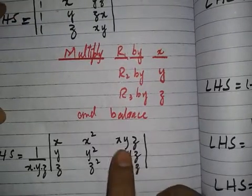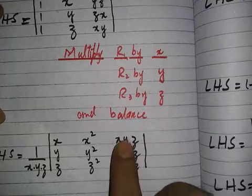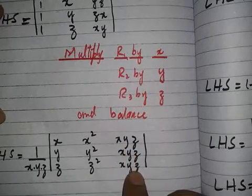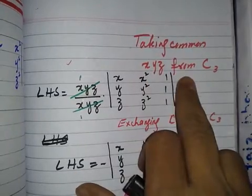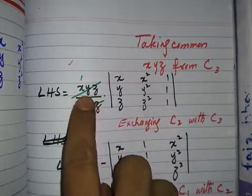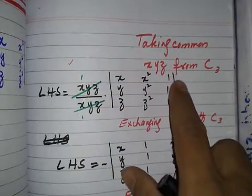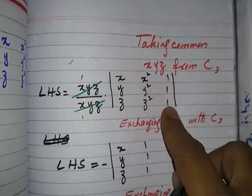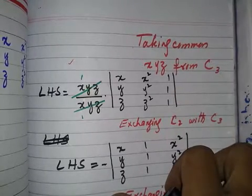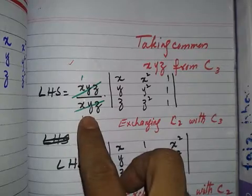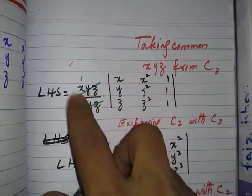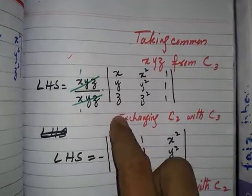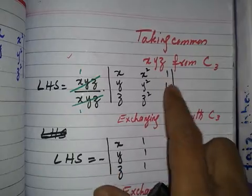Now in column three, all elements are xyz, xyz, xyz — all elements are the same. This means we can take xyz as a common factor from column three. After taking xyz common from column three, that column becomes 1, 1, 1. The xyz taken out cancels with the xyz already in the denominator, so they cancel each other.